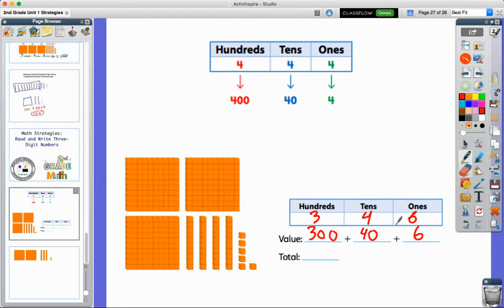But then once I know the value, that kind of puts it in that expanded form, and I can put it back together. I can read that number as 346. I put it together into one three-digit number, 346.